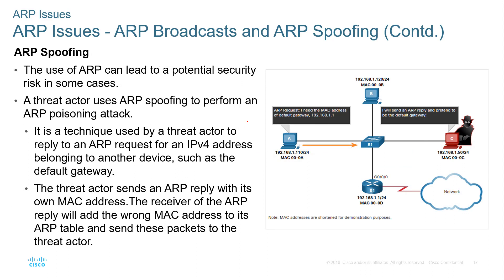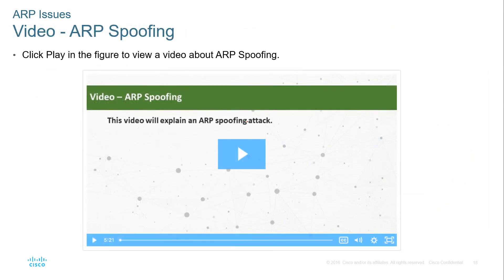Another issue is ARP spoofing. Threat actors can use ARP spoofing to perform ARP poisoning, data redirection, or data interception — for example, a man-in-the-middle attack by spoofing the default gateway. ARP spoofing is relatively easy to do and essentially allows an attacker to pretend to be a different device on the network, or claim a MAC address that they don't actually have.